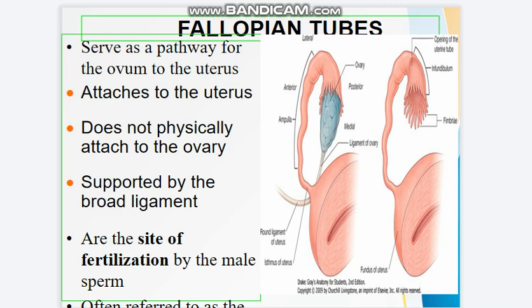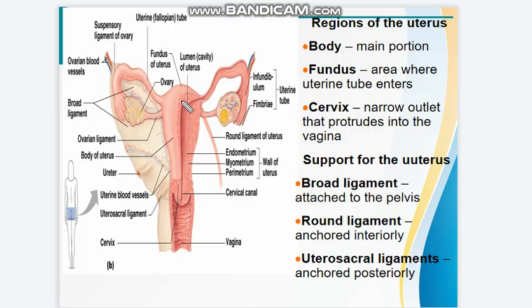The ovaries are comparable to the testes in the male, similar in size and shape. They are located on either side of the uterus, below and behind the fimbriated ends. The ovaries produce ovulation and the hormones estrogen and progesterone. They develop and expel one ovum each month. A human is born with approximately 400,000 immature eggs called follicles; during a lifetime, a human releases about 400 to 500 fully matured eggs for fertilization. The ovaries are composed of ovarian follicles.